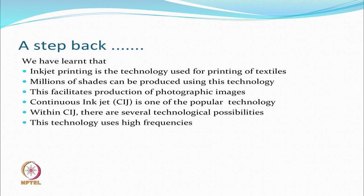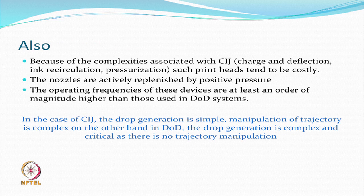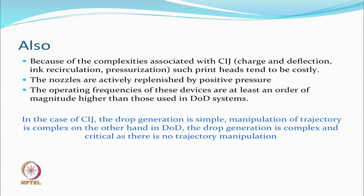Continuous inkjet delivery is one of the technologies within inkjet. This technology generally uses high frequencies because drops must be continuously generated. The complexity associated with continuous inkjet includes charging of drops, deflection of drops, ink recirculation, and pressurization so that positive pressure continuously replenishes the system. Operating frequencies of these devices could be at least an order of magnitude higher than those used in drop-on-demand systems.